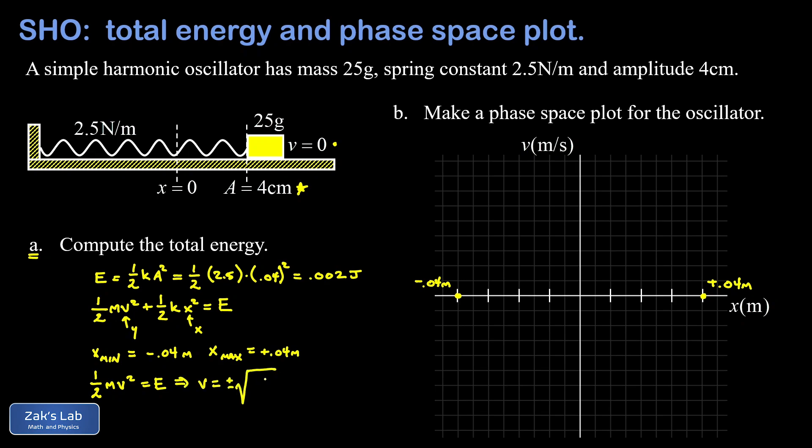We can solve this for v, and I'll go ahead and keep the plus or minus cases indicating different directions. To solve for v, I have to multiply by 2 on both sides, divide by m, and square root the result, so I end up with a square root of 2E over m. Now we can substitute our total energy for the oscillator and the mass in kilograms, and we get two values of velocity: plus or minus 0.4 meters per second.